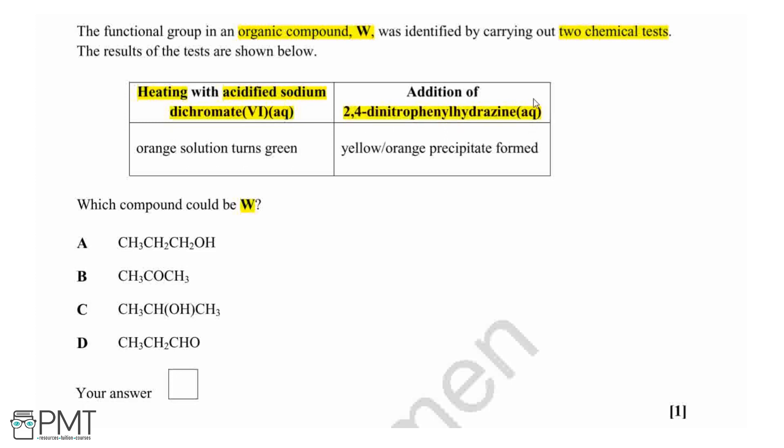Our second test is the addition of 2,4-dinitrophenyl hydrazine, also known as 2,4-DNP, and this is the test for a carbonyl bond which is found in either an aldehyde or a ketone.